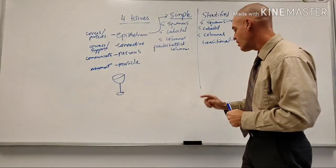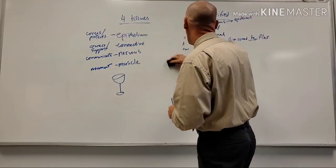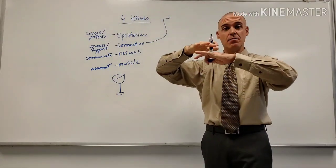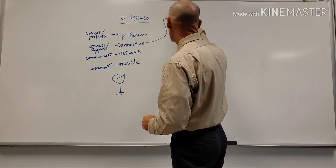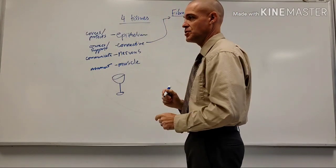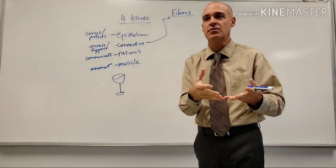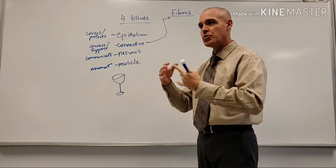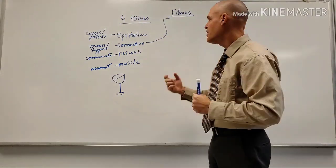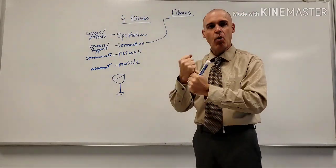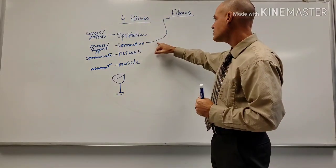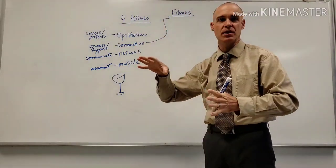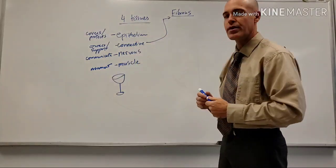Now let's move to connective tissue - actually the biggest category. The first type is fibrous connective tissue. The unique thing about fibrous connective tissue is that it has collagenous fibers, elastic fibers, and reticular fibers. All three contain collagen, a really tough protein that makes connective tissue great at supporting and connecting underlying structures in the body.